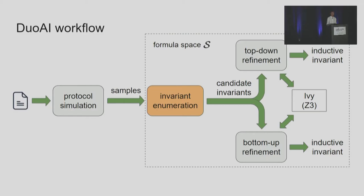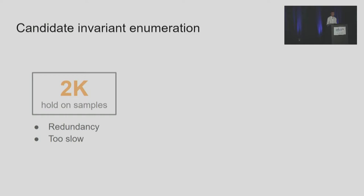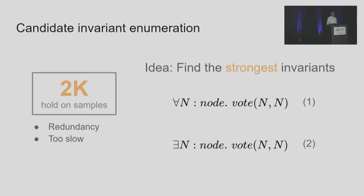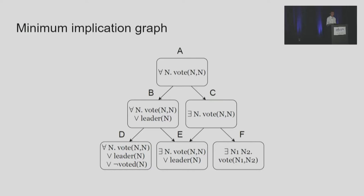For invariant enumeration, although samples can reduce our search space to 2,000, there are still too many redundant invariants and checking all of them is too slow. Our idea is to only find the strongest invariants. Consider two formulas: Formula 1 says every node votes for itself, while Formula 2 says there exists a node that votes for itself. Formula 1 implies Formula 2, and if we already have Formula 1 in our invariant set, adding Formula 2 has no benefit other than making SMT checking slower. So Dual AI will try to first enumerate and check Formula 1, and only when it fails will it move on to consider Formula 2.